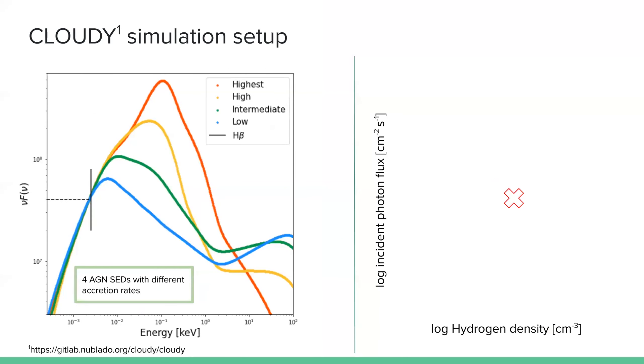For the main goal of this project, we want to investigate what is the effect of different accretion rates of the AGN-SED to the line emissions in the narrow line region. So in this case, we have four SED models with different accretion rates, as shown here.